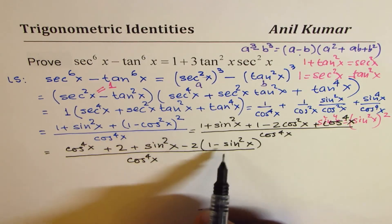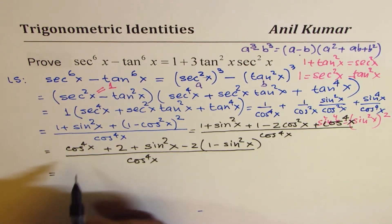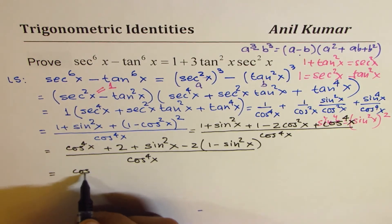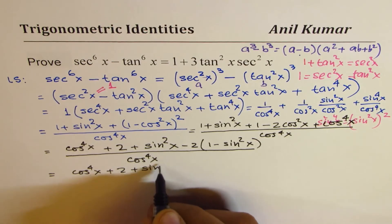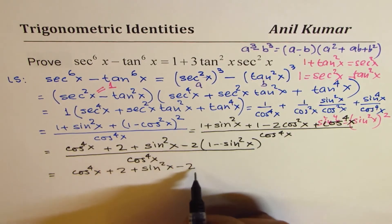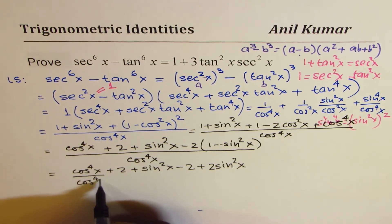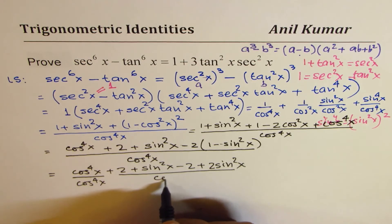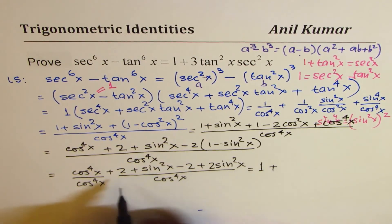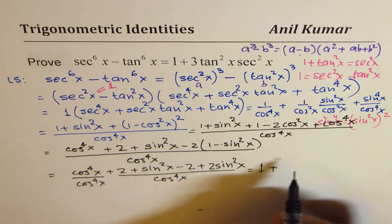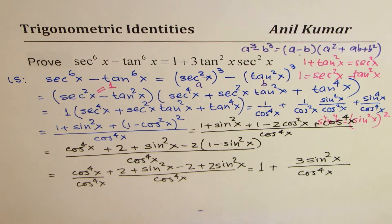We have changed from sine to cos and back to simplify. We can write cos to the power of 4x as such, then open the bracket: plus 2, and minus 2 times 1 minus sine squared x gives minus 2 plus 2 sine squared x. So 2 minus 2 is 0, and we get sine squared x plus 2 sine squared x equals 3 sine squared x, all divided by cos to the power of 4x.